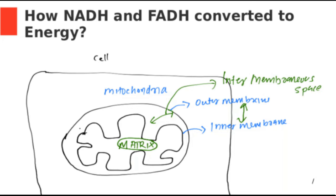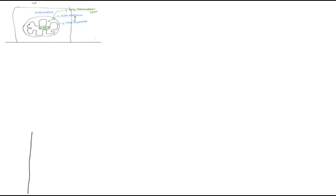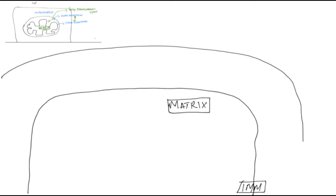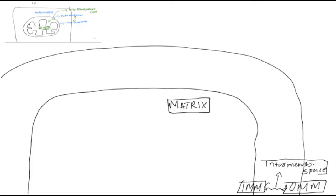I want to magnify the matrix and intermembranous space. I'm drawing the inner mitochondrial membrane — marked as IMM — with the matrix inside it. Outside the inner mitochondrial membrane is the outer mitochondrial membrane, and the space between the two is the intermembranous space.